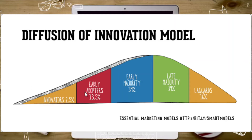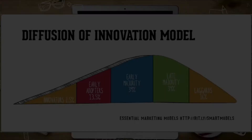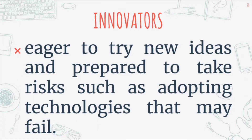If you look at the model, we have your Innovators — 2.5 percent of people are innovators. Next are Early Adopters at 13.5 percent. Early Majority and Late Majority are equal at 34 percent each, and Laggards are 16 percent. Let's discuss the difference between each one.